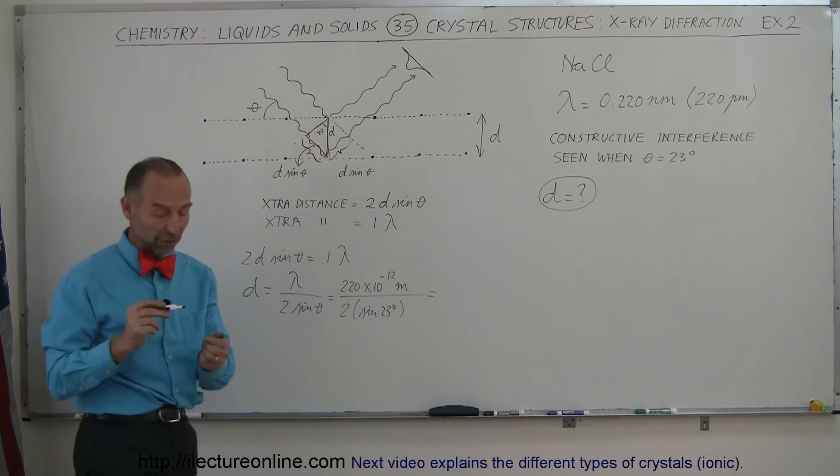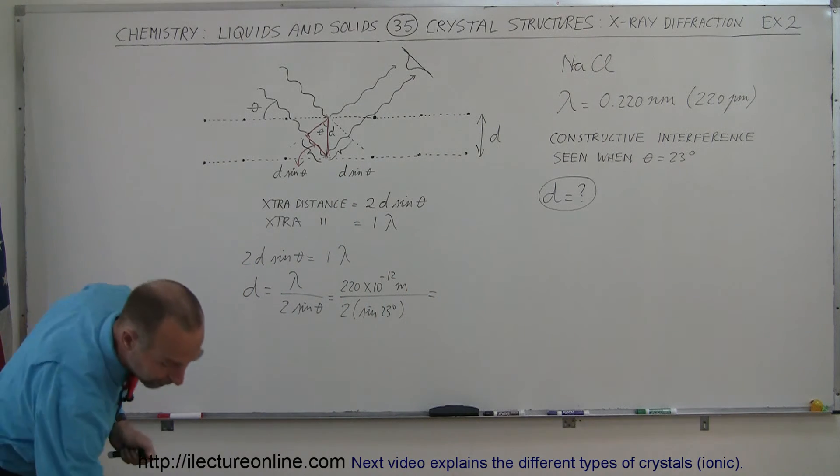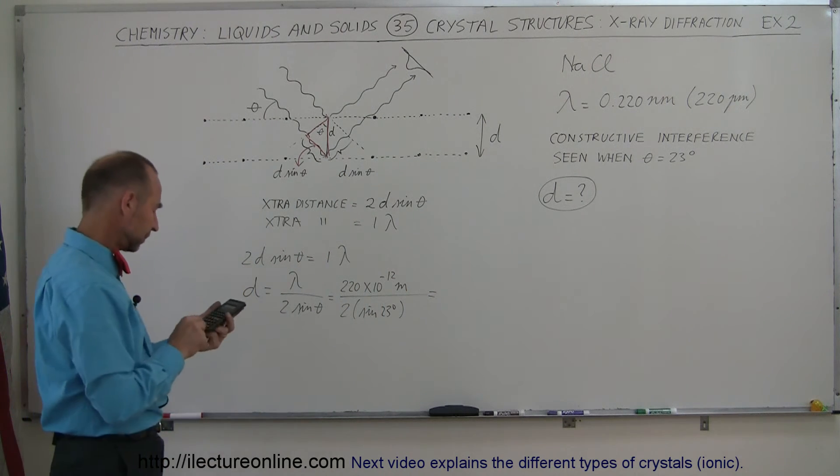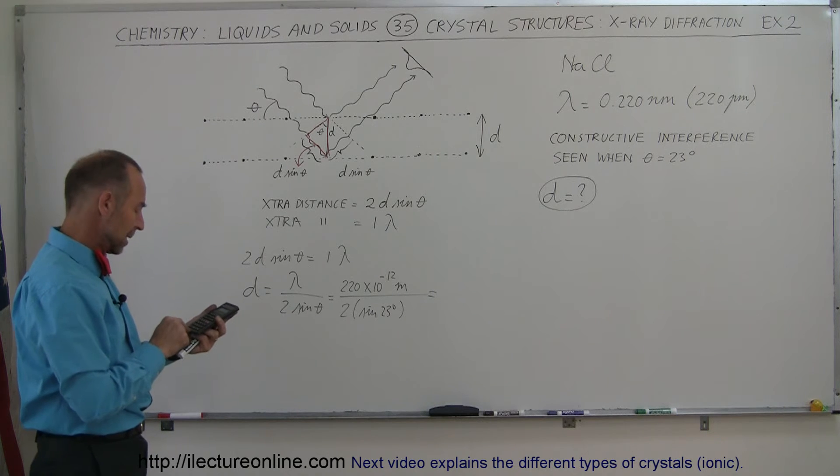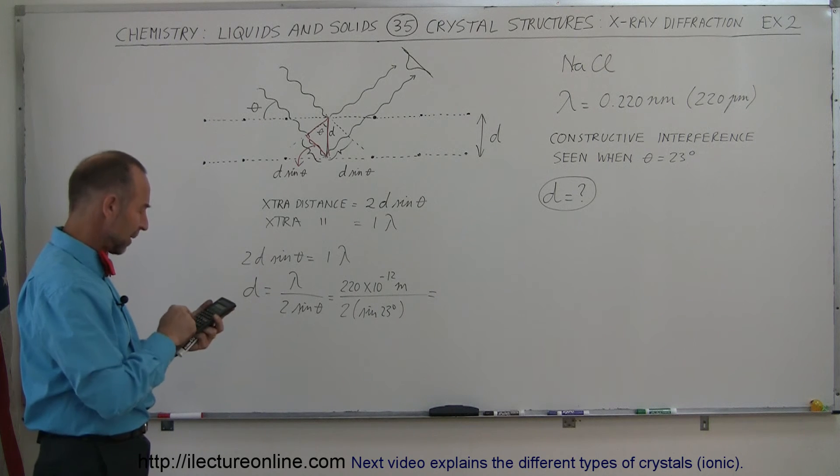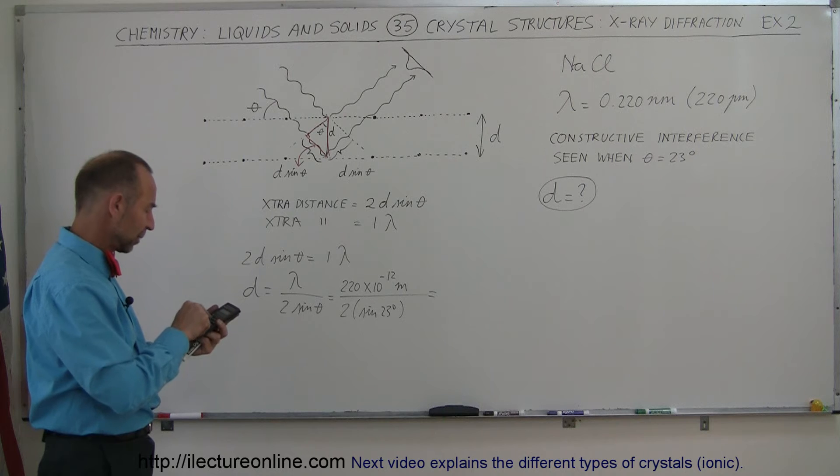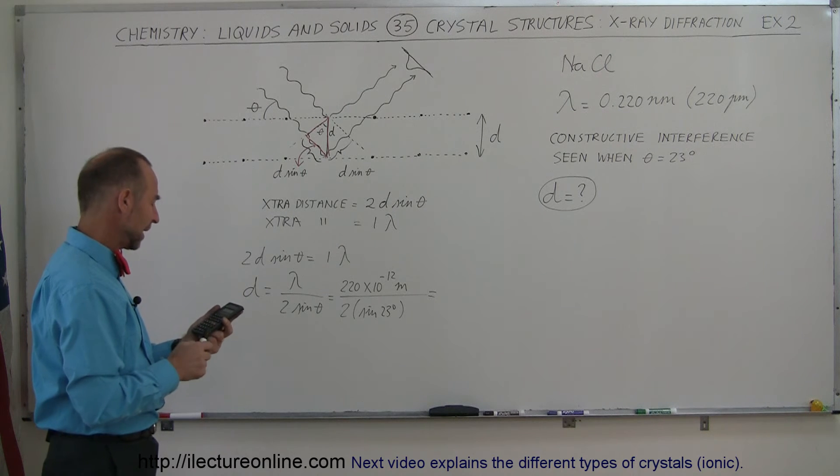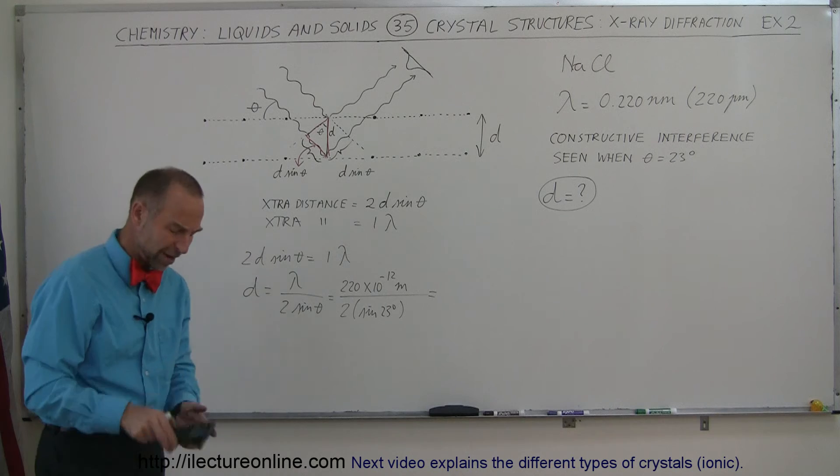so it's 220 times 10 to the minus 12 meters divided by 2 times the sine of 23 degrees. And that should give us the separation distance between the sodium and the chlorine ions. Let's find out. So 220 picometers divided by 2, divided by the sine of 23 degrees.